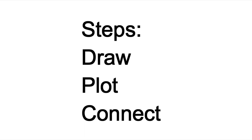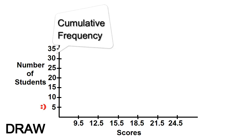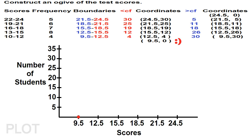Let's construct an ogive chart using three simple steps: draw, plot, and connect. First, draw the axis of coordinates and label them. The values along the horizontal line are the class boundaries. By convention, a less than ogive begins on the horizontal axis at the lower class boundary of the lowest class interval. The number of students who got scores less than 9.5 is 0, less than 12.5 is 4, less than 15.5 is 12, less than 18.5 is 19, less than 21.5 is 25, and less than 24.5 is 30.